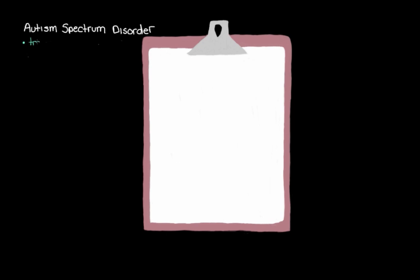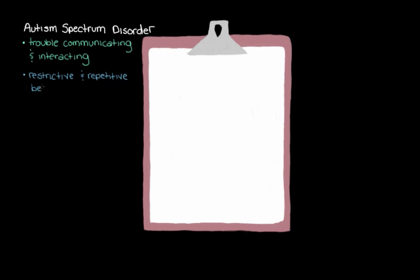Autism Spectrum Disorder is a really broad disorder where the affected person has trouble communicating and interacting with other people. They also have a sort of restrictive and repetitive behavior where they can be really restrictive with their interests, maybe only showing interest in one or two activities, and repetitive with their behaviors or the routines that they need in place.